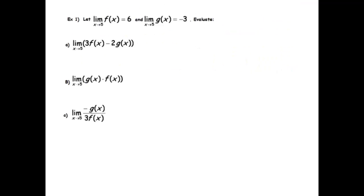So let's say we've got information about these functions f and g. We've got that the limit of f(x) as x goes to 5 is 6, and the limit of g(x) as x goes to 5 is negative 3. And then we're asked to evaluate these limits here.